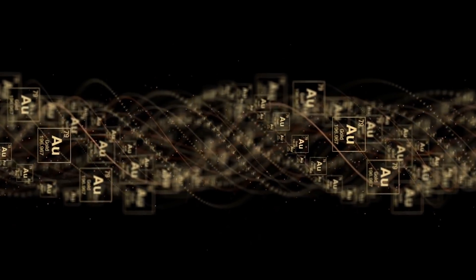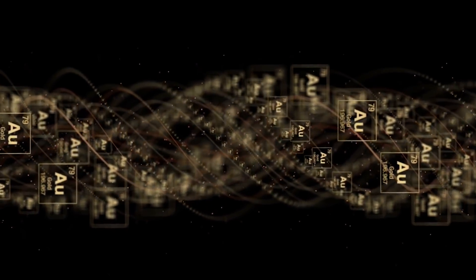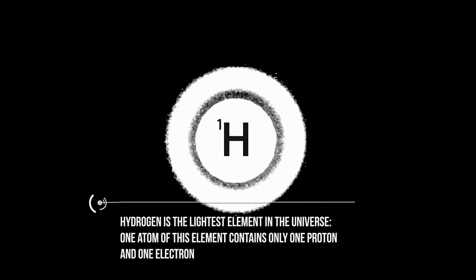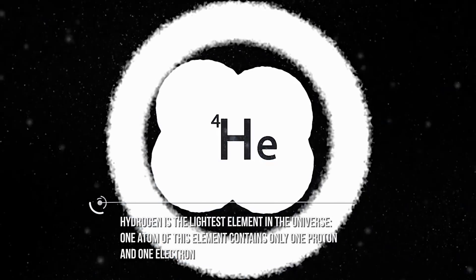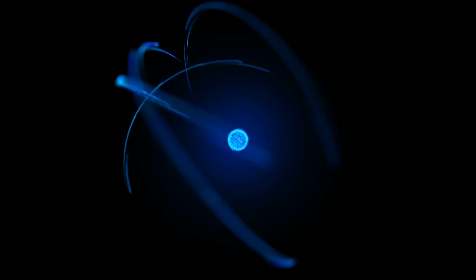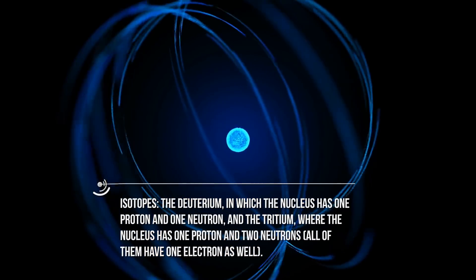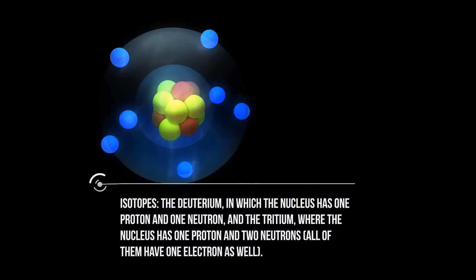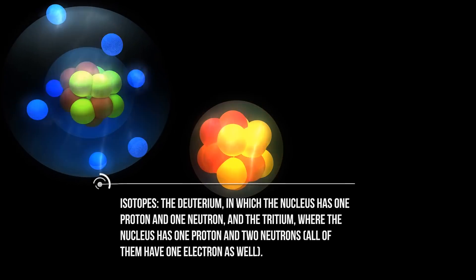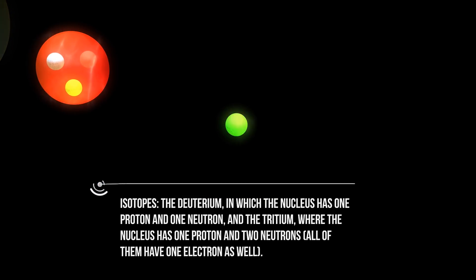To answer this question, we need to analyze the periodic table starting from the lightest elements, hydrogen and helium. Hydrogen is the lightest element in the universe. One atom of this element contains only one proton and one electron. There are also two slightly different versions of this element, known as isotopes: deuterium, in which the nucleus has one proton and one neutron, and tritium, where the nucleus has one proton and two neutrons. All of them have one electron as well.